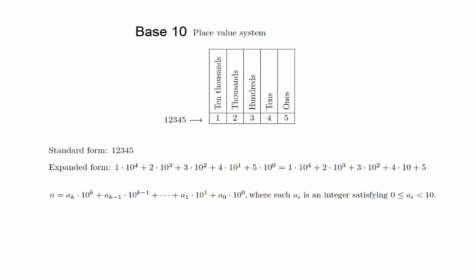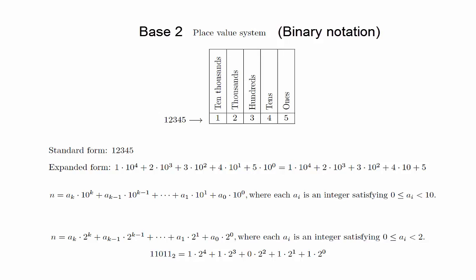Instead of working with base 10, we can also work with base 2, which is known as binary notation. The change is that instead of building numbers around powers of 10, we will build numbers around powers of 2. A consequence of this is that instead of using the digits 0 through 9, we will only use the digits 0 and 1. In order to distinguish our binary numbers from the standard base 10 numbers, we will write binary numbers with a subscript 2 at the end.